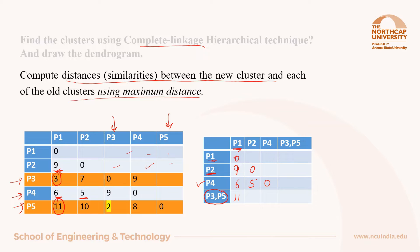Distance of cluster P3P5 from P2 will be maximum of 10 or 7, so 10 will come here. Distance of this cluster from P4 will be maximum of 8 or 9, so 9 will come here, and the diagonal entry is 0. This is how the new matrix of size 4 by 4 is generated.